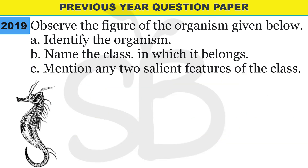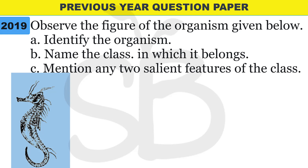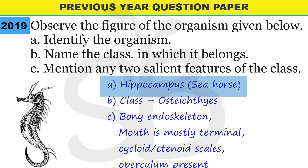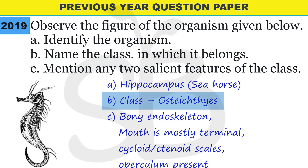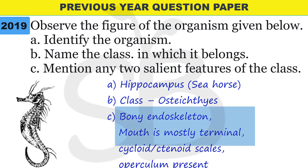Next question from 2019: observe the figure and identify the organism. The organism is Hippocampus, the seahorse. Part B - name the class to which it belongs: Class Osteichthyes (bony fish). Part C - mention any two salient features of the class: bony endoskeleton, terminal mouth, cycloid scales, and operculum present.